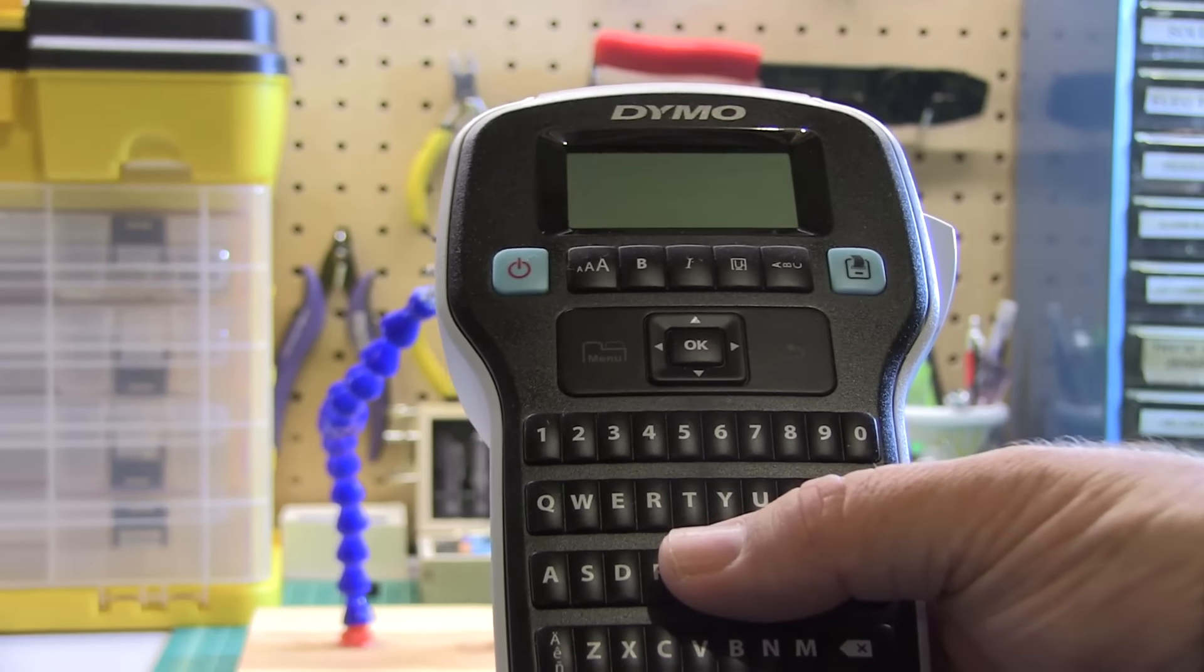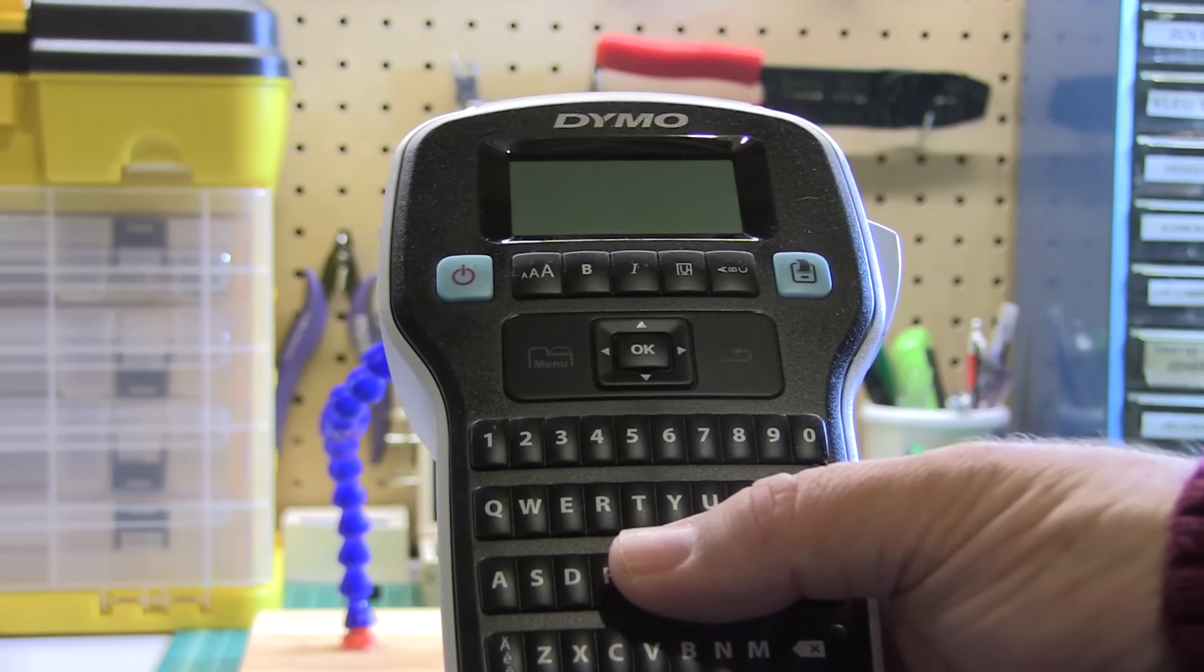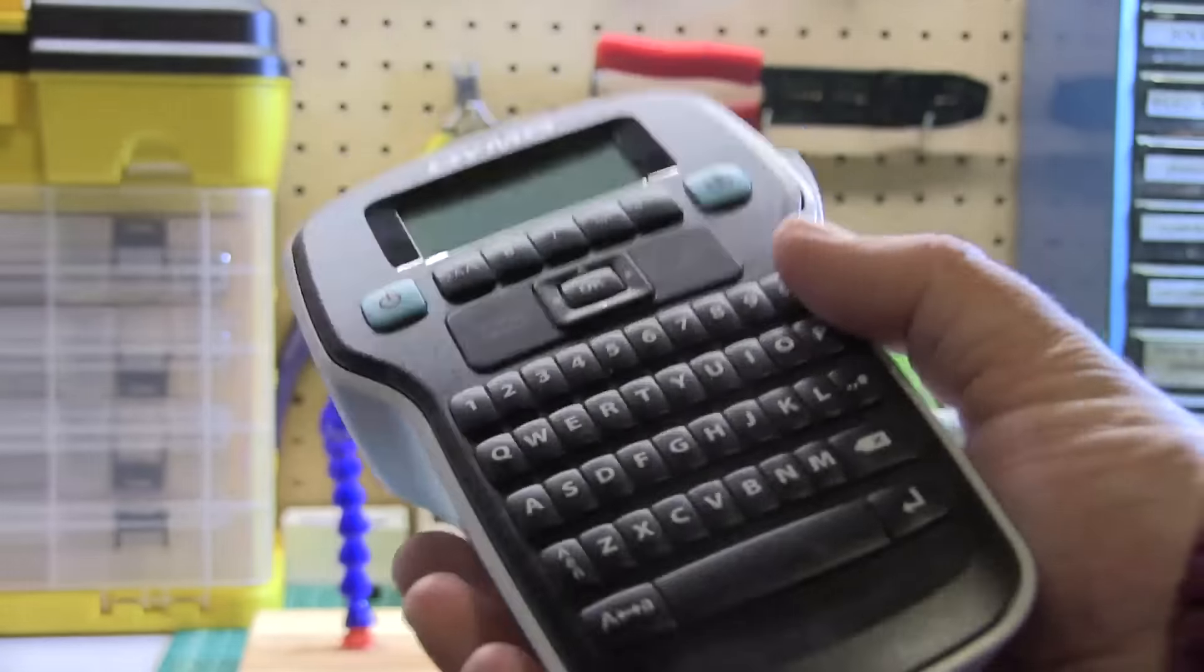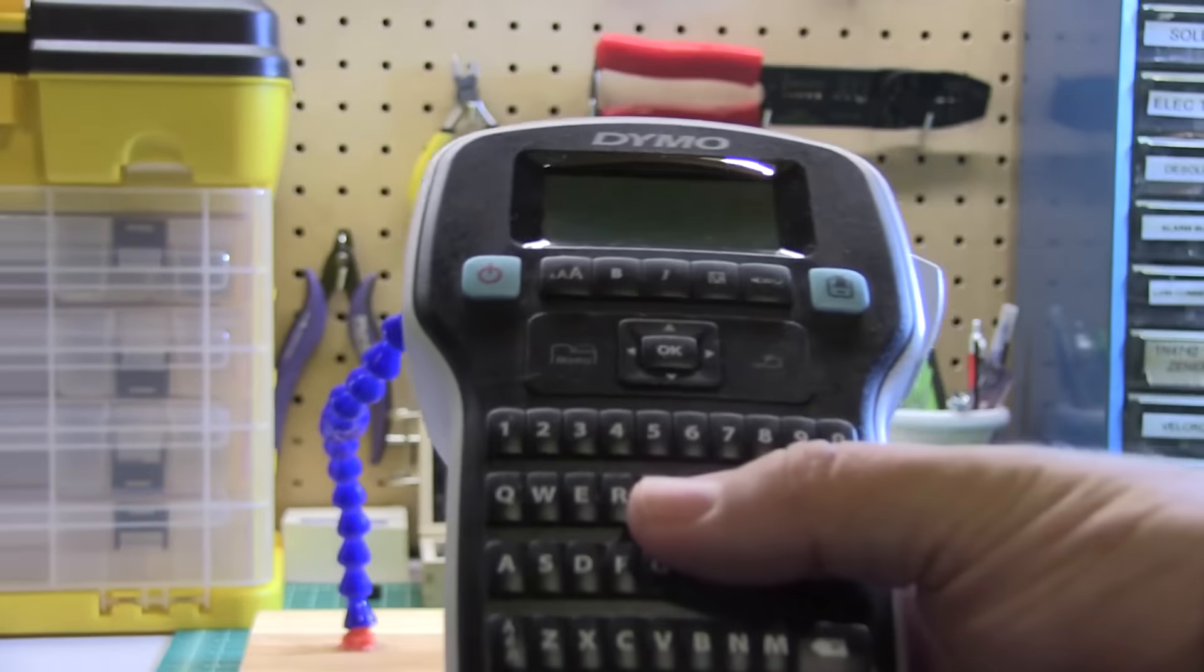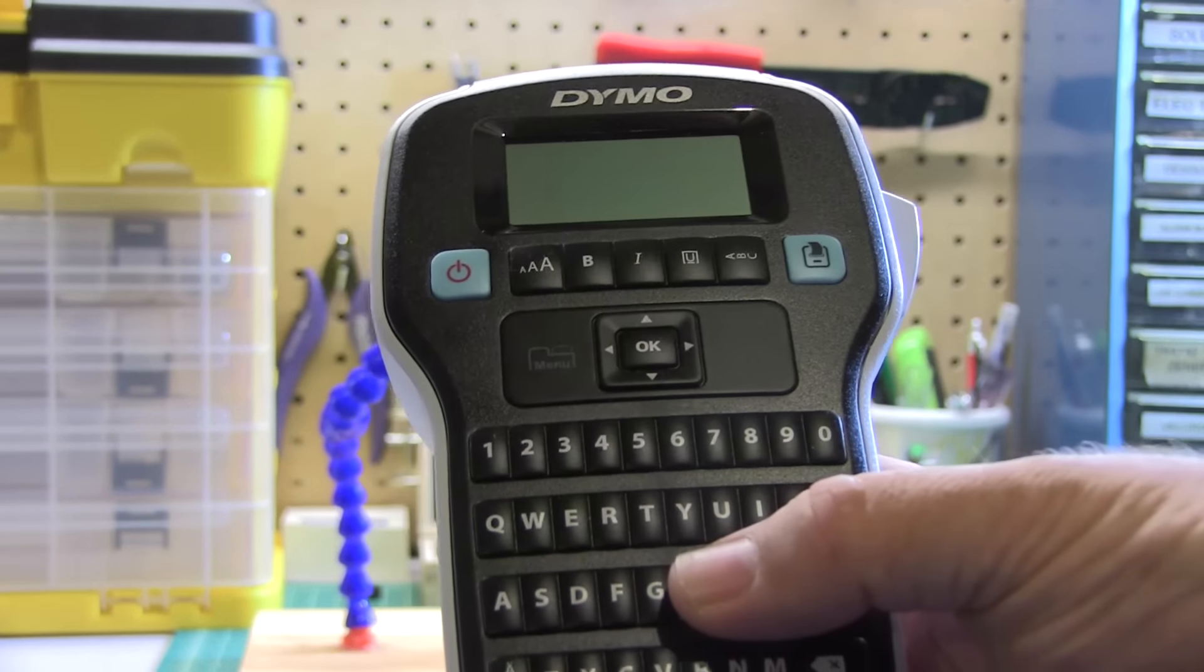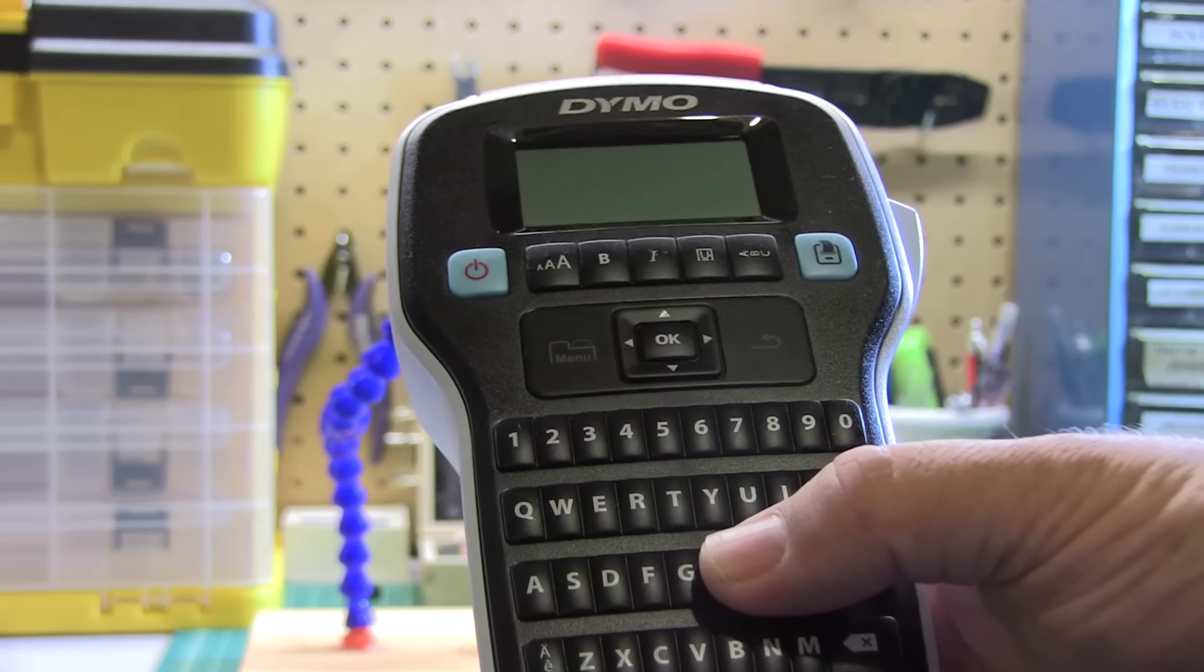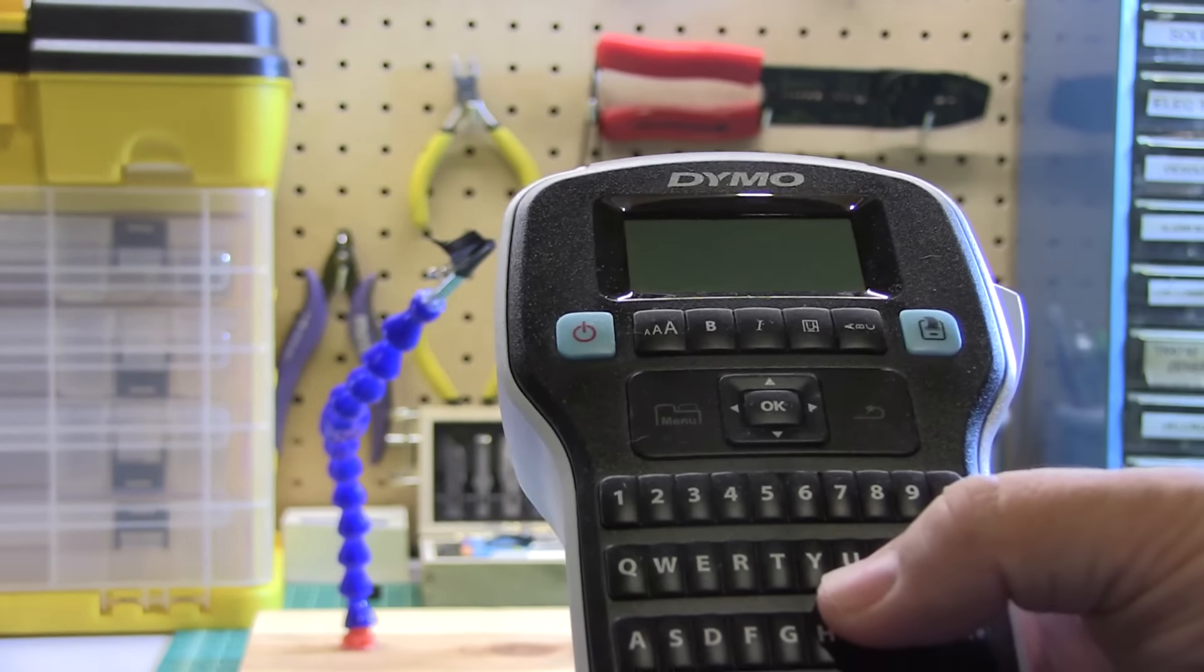Another very useful tool to have on your workbench is a label printer. This is one that I got on sale, I think it was OfficeMax for like $10. It's a Dymo D1 compatible printer. Now that we have to mark all of our UAS that are above 250 grams with our FAA license, this is a very handy tool. I'll also use it for other things like labeling my drawers.